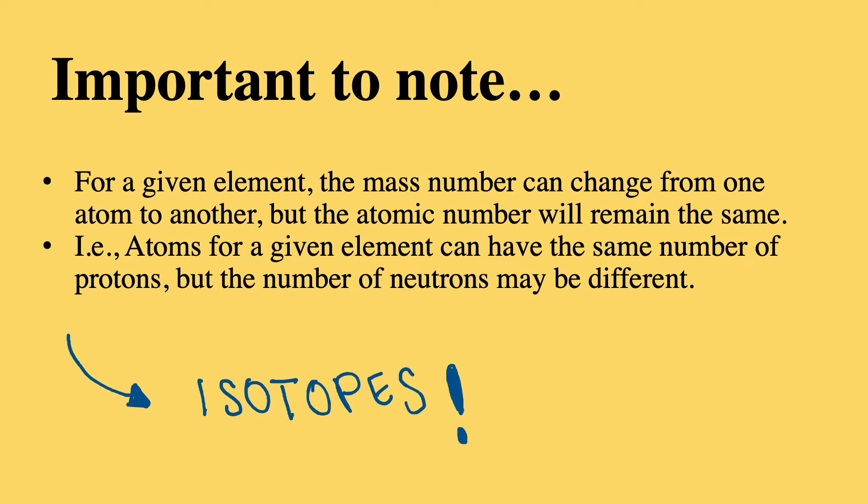In other words, even though the atoms for a given element will have the same number of protons, the number of neutrons can change. These types of atoms are called isotopes.